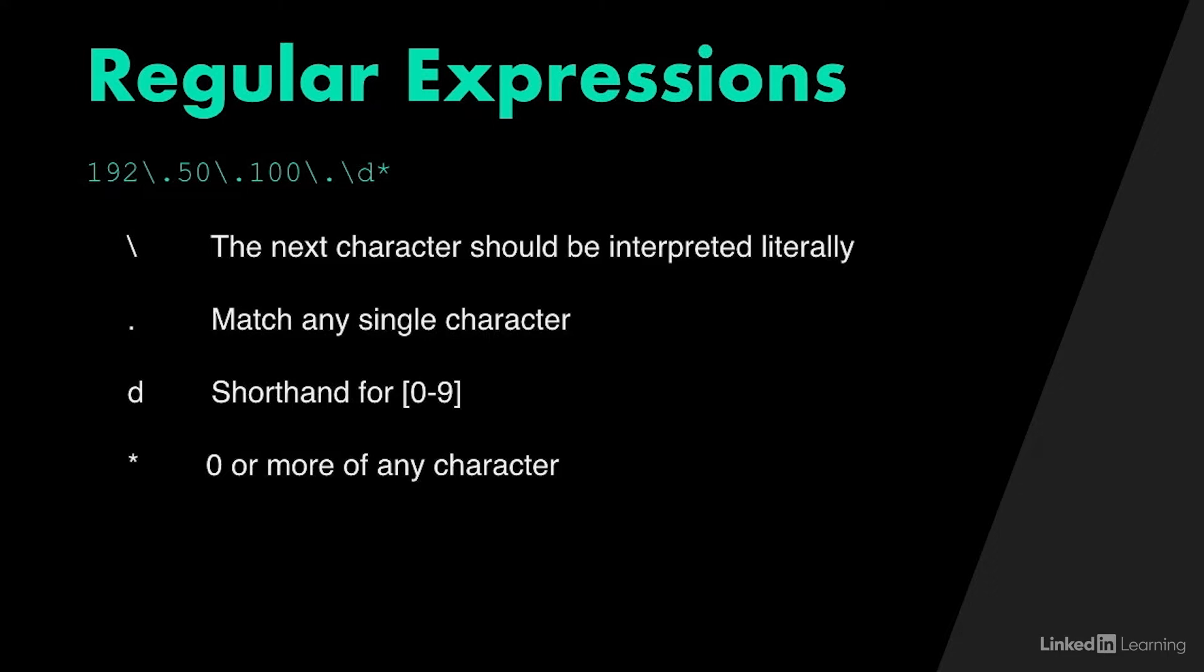Now, at the very end, you'll see the \d, which is shorthand for any number zero to nine, the list of numbers from zero to nine. And then the asterisk means zero or more of any character. And this will essentially allow us to capture that entire range of IPs in one simple format.